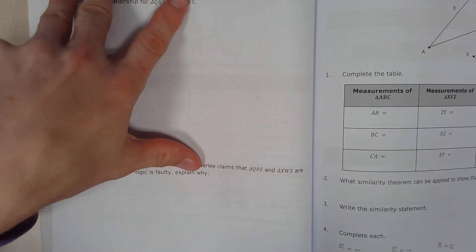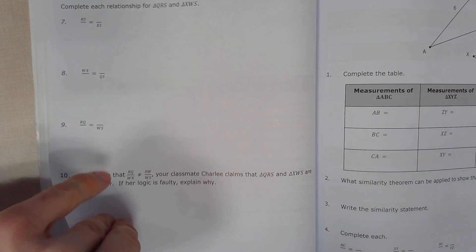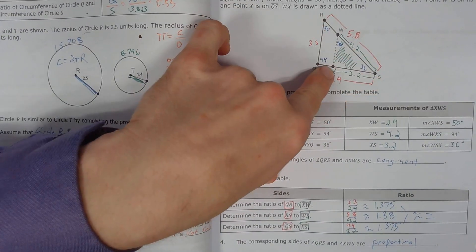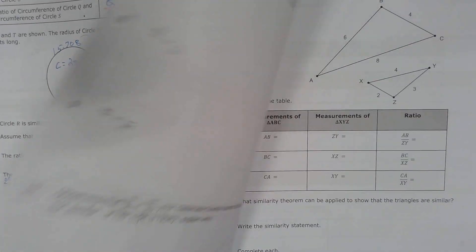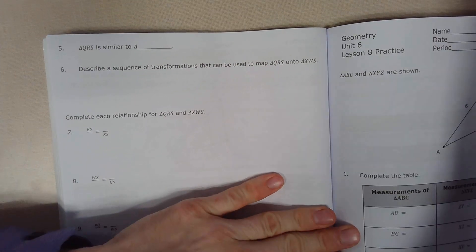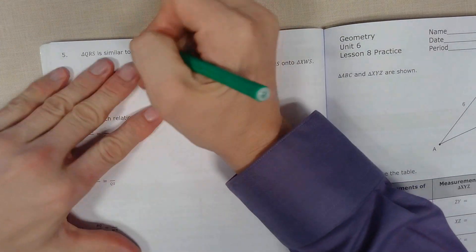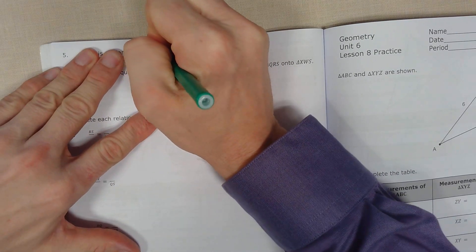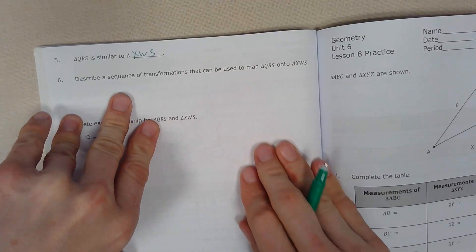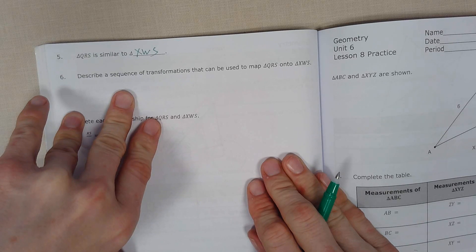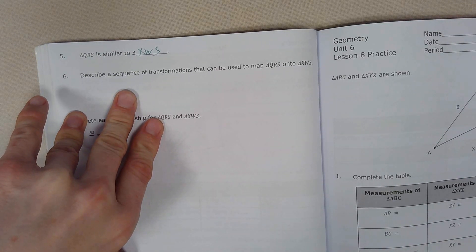Now you're going to say QRS is similar to XWS. Describe the sequence that can be mapped. It's going to be a dilation.